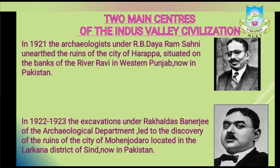When the civilization was first discovered, it was named the Indus Valley civilization for an obvious reason — most of the sites discovered at that time were located either on the banks of the River Indus or on the banks of its tributaries.